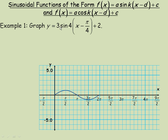The example on this page asks us to graph y = 3sin(4x − π/4) + 2. We're dealing in radians, and notice the horizontal scale is in radians, not degrees. The a value in front of the sin or cos is the amplitude, so the 3 here is the amplitude. The amplitude is the distance vertically between the axis through the middle of the graph and a peak or valley — a maximum or minimum point.